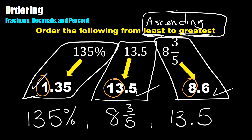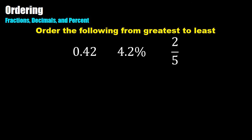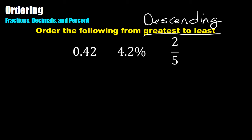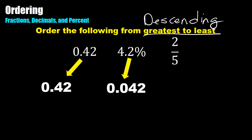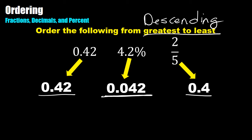Here's a different example where I'm going to order these from greatest to least, which is the same as the word descending. My first step is to rewrite these in a common format — I like decimal format best. So: 42 hundredths stays the same; 4 and 2 tenths percent is the same as 42 thousandths; and 2 fifths is the same as 4 tenths. When comparing these decimals, I'll add zeros so each decimal goes to the thousandths place.